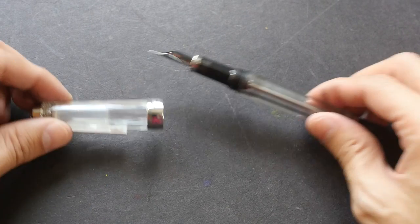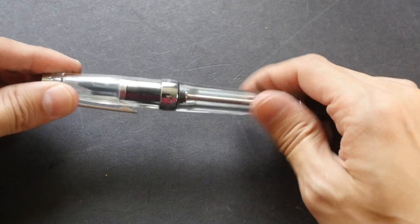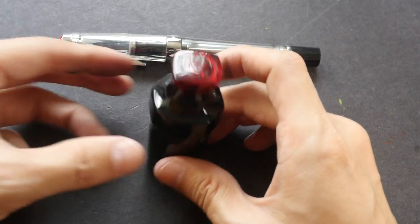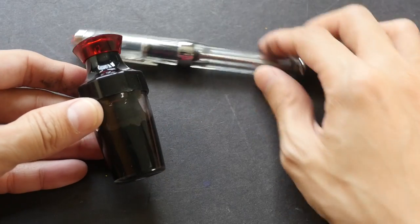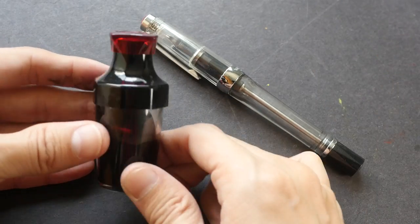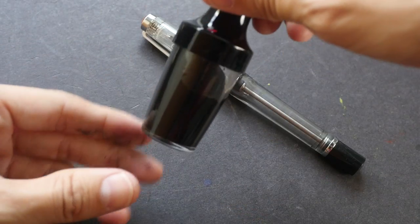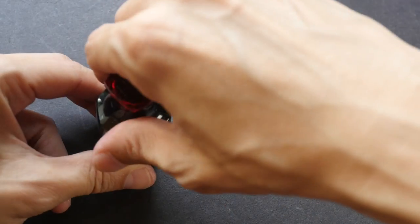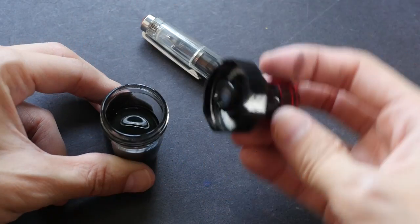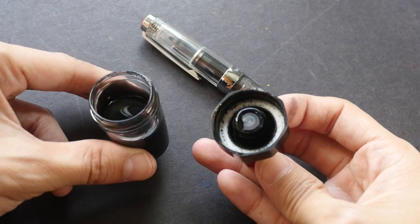Other than the fountain pen, I also want to show you an accessory. Now this ink bottle is made specially for this fountain pen. So it's a rather small ink bottle. Let me open it up to let you see. So it looks something like this.